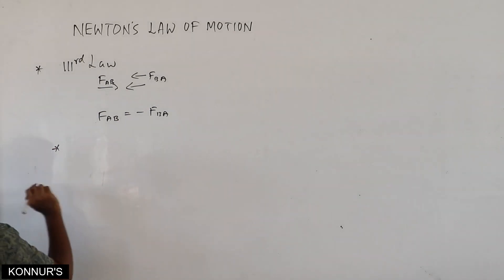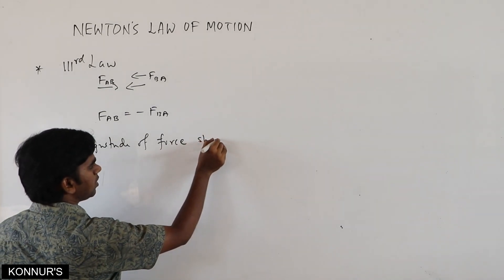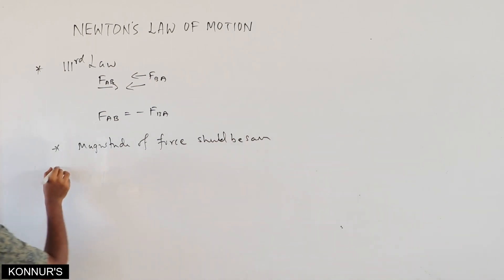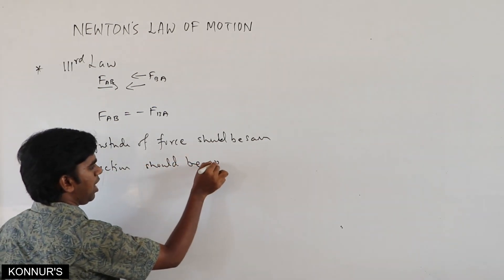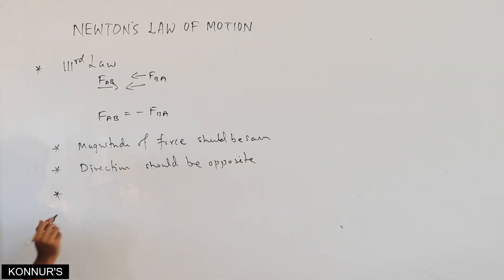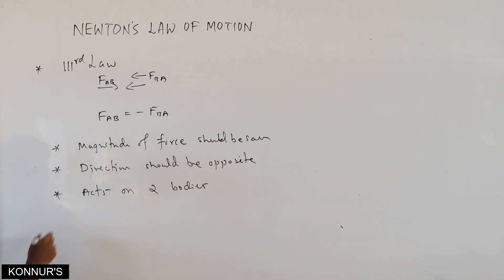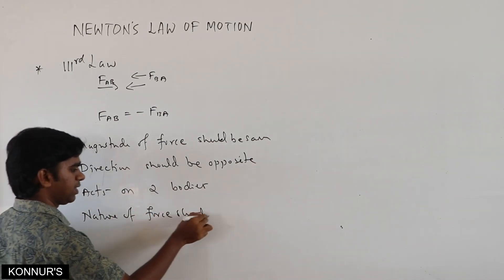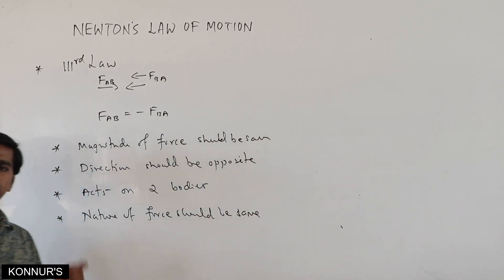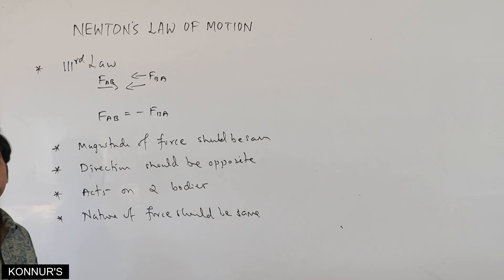The four important things to verify for an action-reaction pair: First, the magnitude of force should be the same. Second, the direction should be opposite. Third, it acts on two bodies — not on a single body. Fourth, the nature of force should be the same: if one is contact force, the other should also be contact; if one is non-contact, the other should also be non-contact. Only if all four apply can we consider it an action-reaction pair.